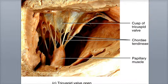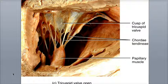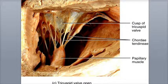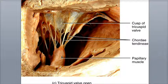Now let's explore how the atrioventricular valves work. Here's a view of the gross anatomy of the tricuspid valve. Here are the cusps of the valve, the chordae tendineae — the tendon cords — that connect the cusps to extensions of the trabeculae carneae, called the papillary muscles.